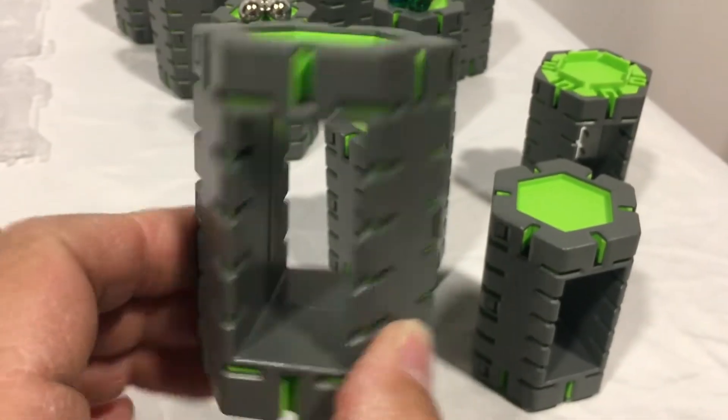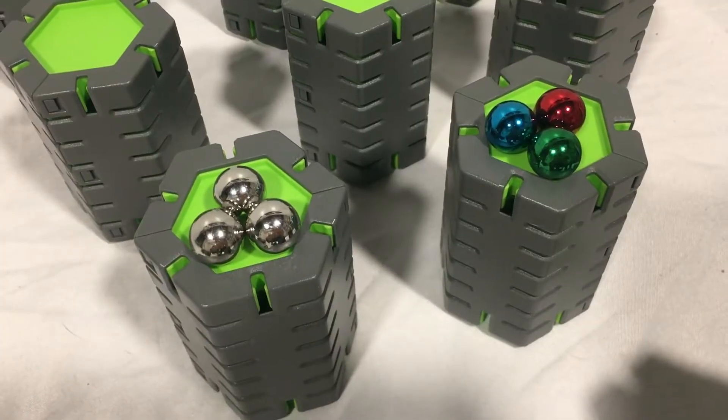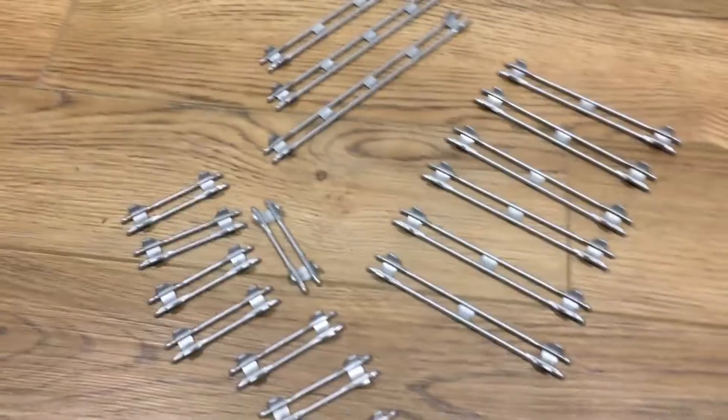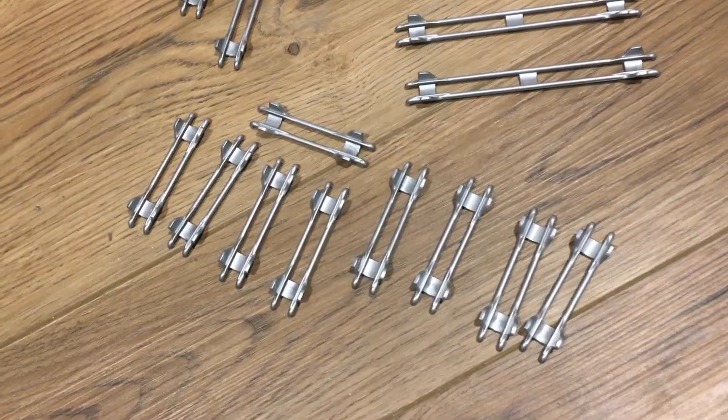And with this set you do get six marbles, three silver and a red, blue, and green one. So of your straight ramps you get three long ones, six medium ones, and nine small ones.